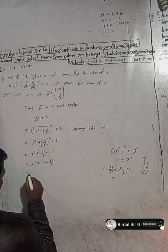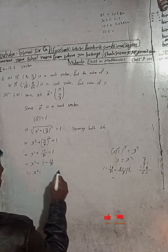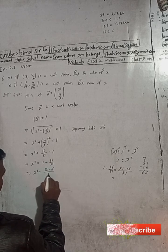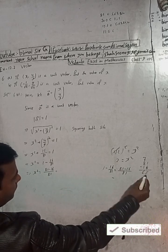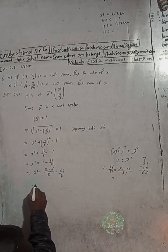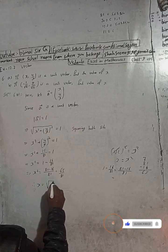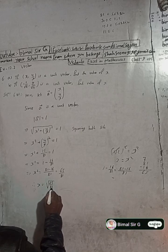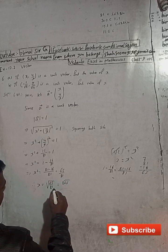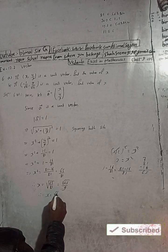This implies x squared is equal to 81 minus 16 by 81, which is 65 by 81. Therefore x is equal to root under 65 by 81. Since 81 is 9 squared, x is equal to root under 65 by 9.